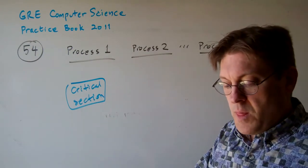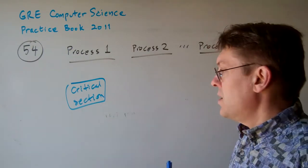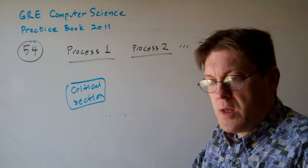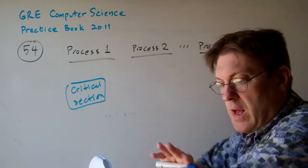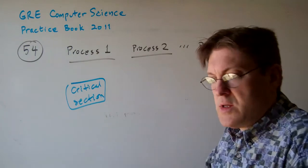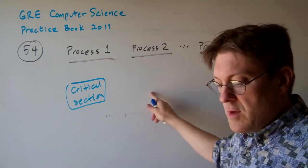So basically the mutual exclusion problem is, you think about it as this process uses something and then blocks everybody else out from using it. And when it's done, it releases it so that other processes can use it.